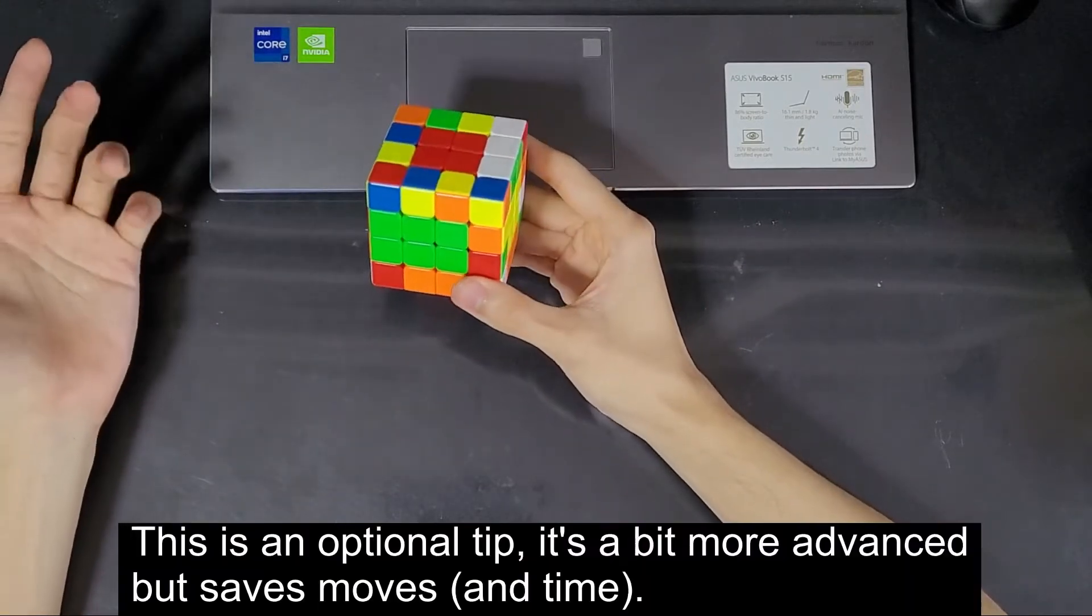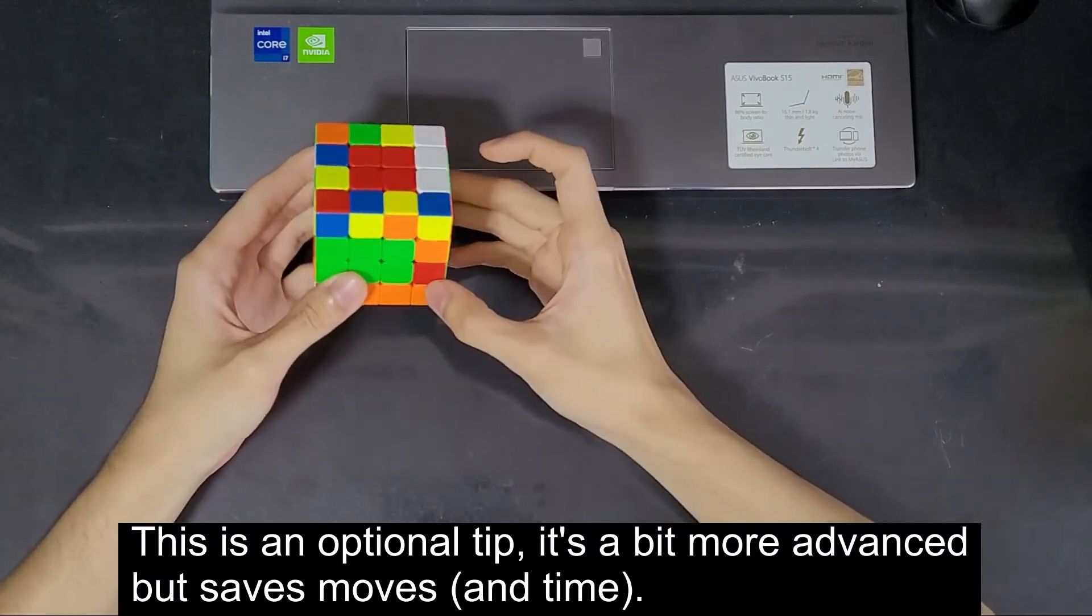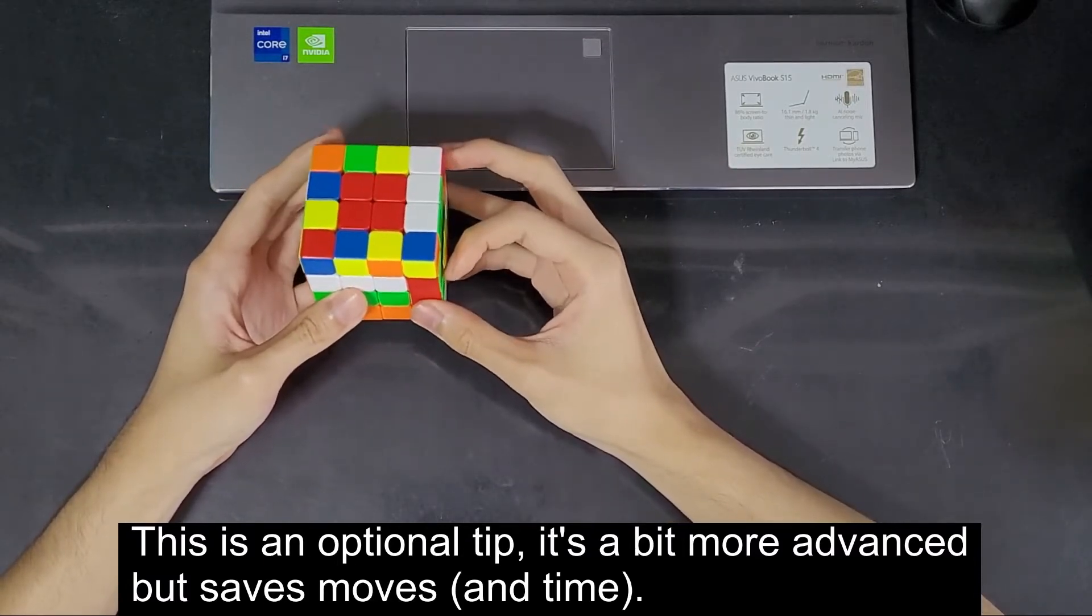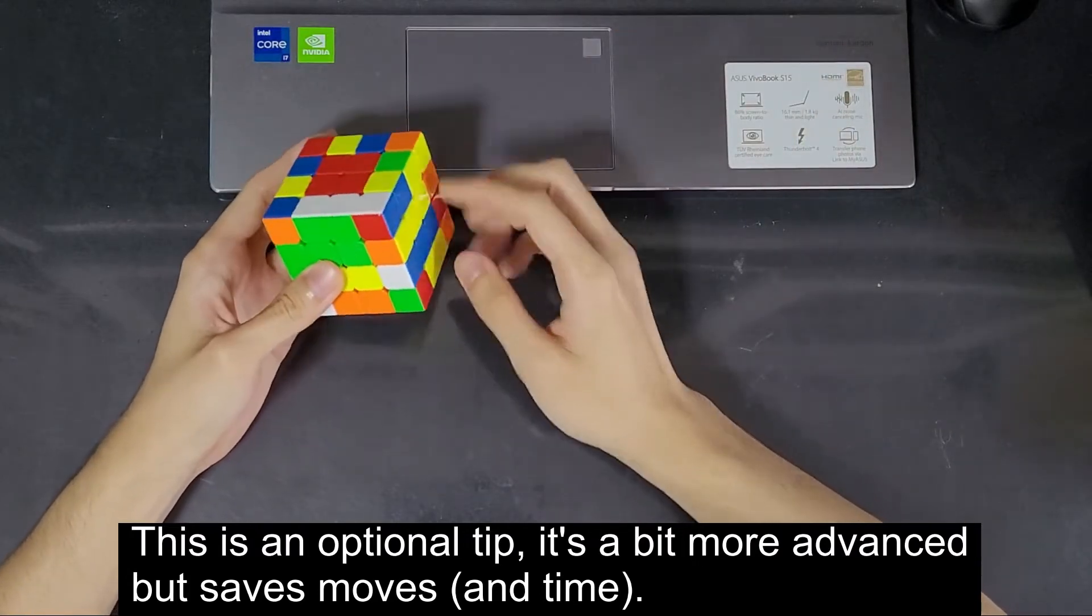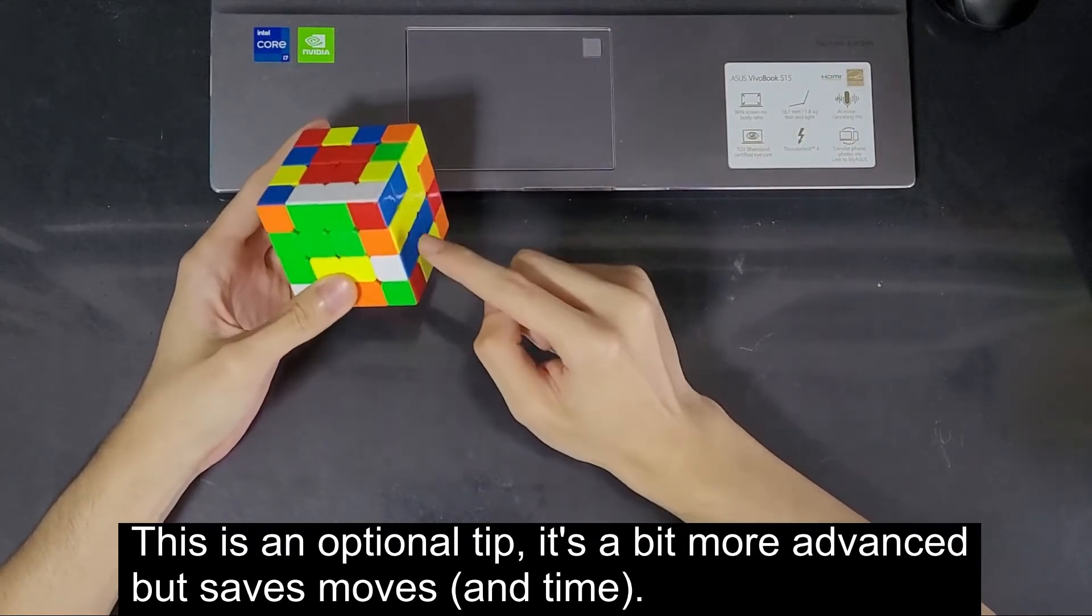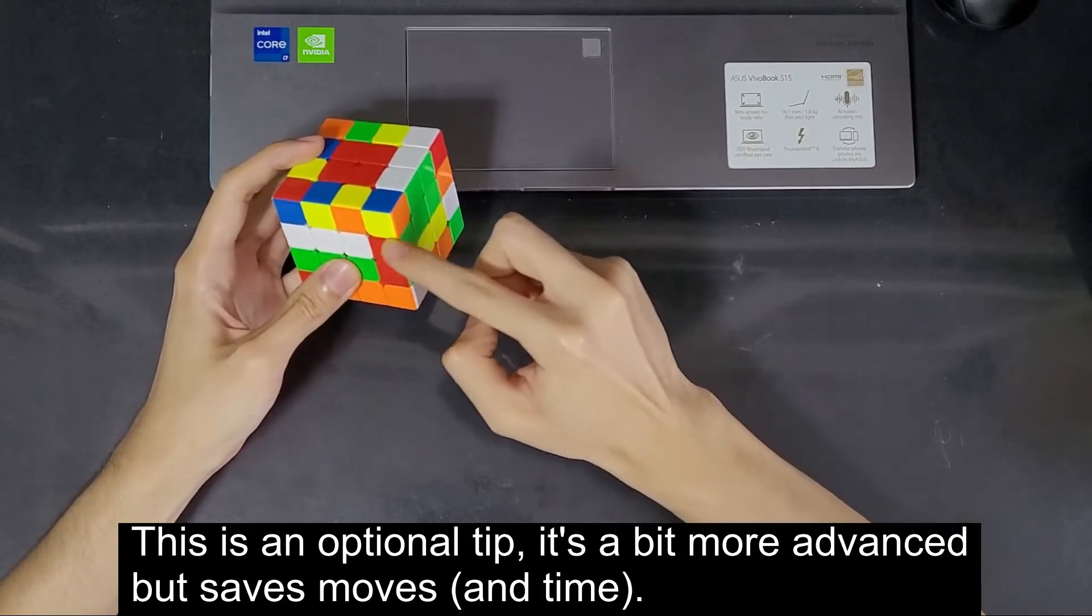Another thing you can do some of the time is that, let's say I want to solve this green and red edge so I slice. But instead of just randomly replacing with any edge, I notice that when I slice back this orange and yellow, it's going to come exactly above this spot here.